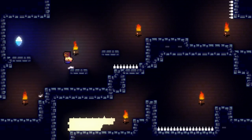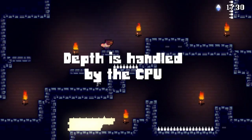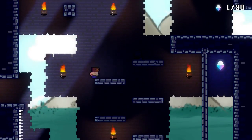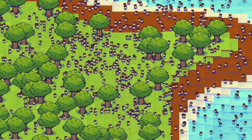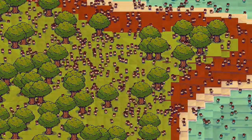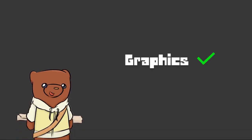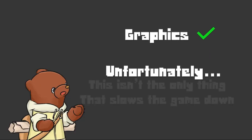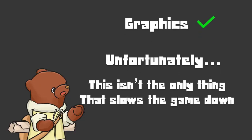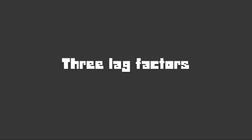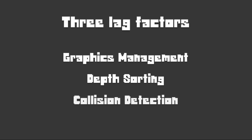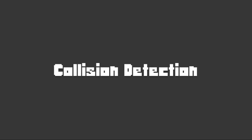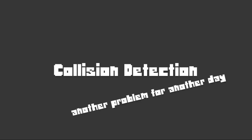Normally, when making a 2D game, depth is handled by the CPU. This is no problem if objects stay at the same depth. But in Baretopia, where we have thousands of bears whose depths are constantly changing, the CPU starts to complain. There are three big things that could potentially slow down the game: graphics management, depth sorting, and collision detection. If either of these is not optimized, the game will slow down. Right now, collision detection is yet to be implemented, but that will be another problem for another day.